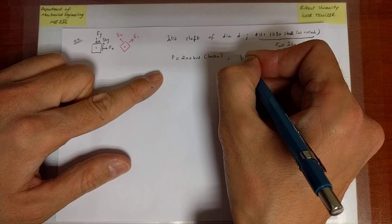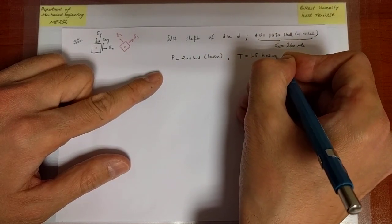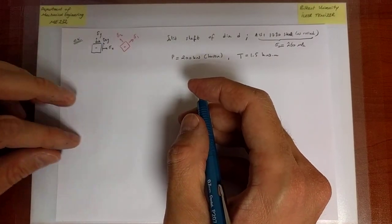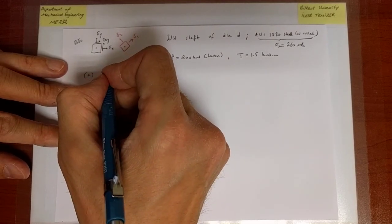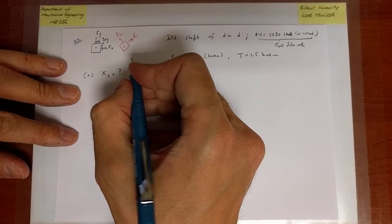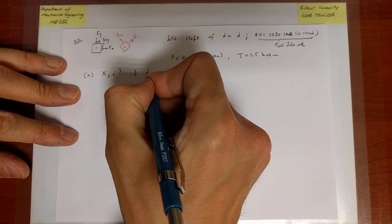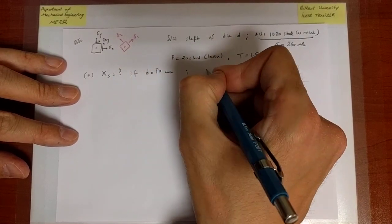That's the structure, and additionally there is a tensile axial force P of magnitude 200 kN tension, and a torque which is 1.5 kN meters. And what we would like to do is twofold: one, we'd like to find the safety factor against yield using the Tresca criterion, maximum shear stress yield criterion, if D is equal to 50 millimeters.